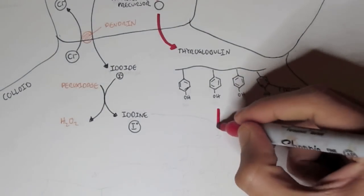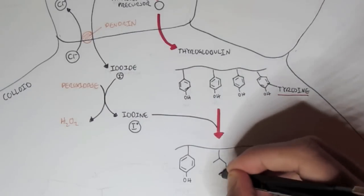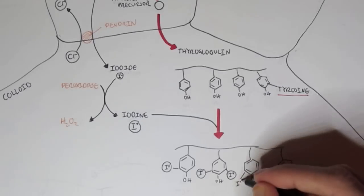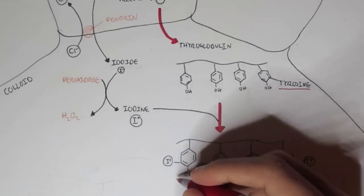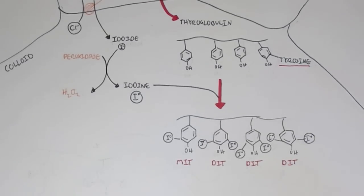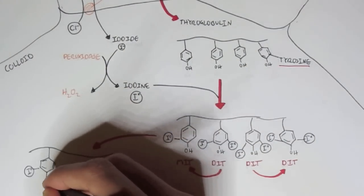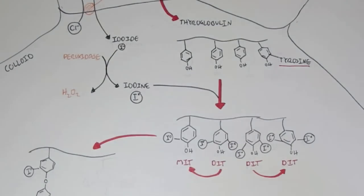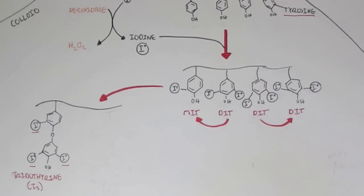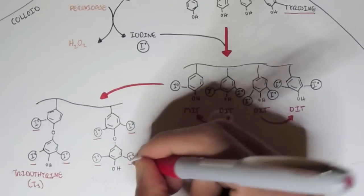Iodine then binds to the tyrosine rings in the thyroglobulin. One iodine can bind to a tyrosine ring, or two iodines can bind to a tyrosine ring. When there is one iodine bound to a tyrosine ring it is called MIT — monoiodotyrosine. When there are two iodines bound to a tyrosine ring it is called DIT — diiodotyrosine. MIT and DIT, or DIT and DIT, can then form ester bonds with each other, joining two tyrosines together. If MIT and DIT bind together we get three iodine molecules — triiodothyronine, or T3. If DIT and DIT bind together we get four iodine molecules — thyroxine, T4.